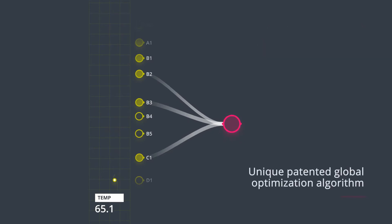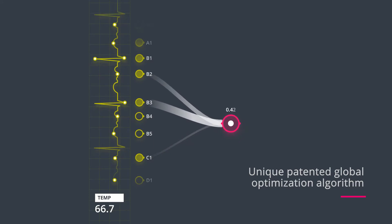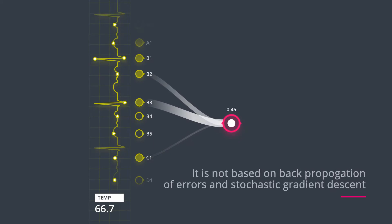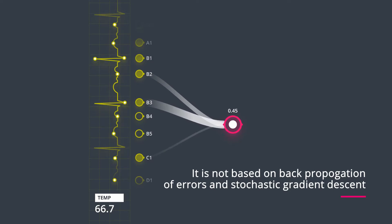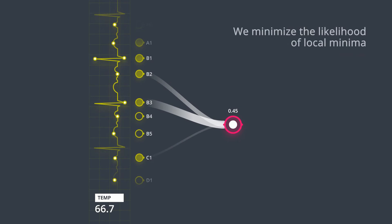We also leverage a unique patented algorithm to adjust the coefficients within a model. Unlike most algorithms, Newton's algorithm is not based on backward propagation of errors and stochastic gradient descent. Furthermore, the Newton algorithm minimizes the likelihood of hitting local minima.